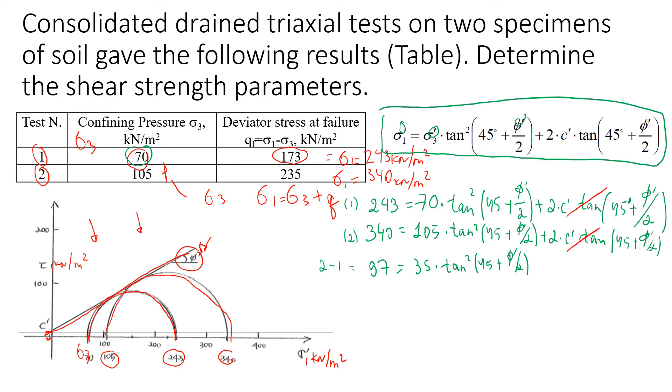97 divided by 35 will be about 2.77, equal to tangent squared of (45 plus friction angle divided by 2).